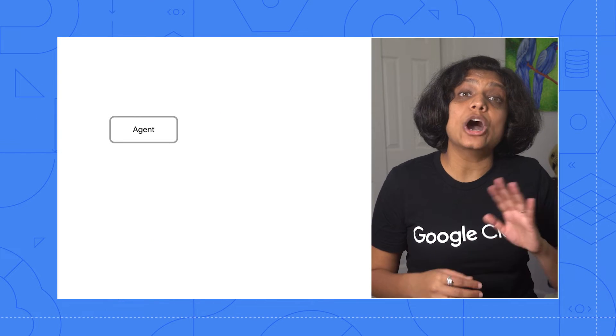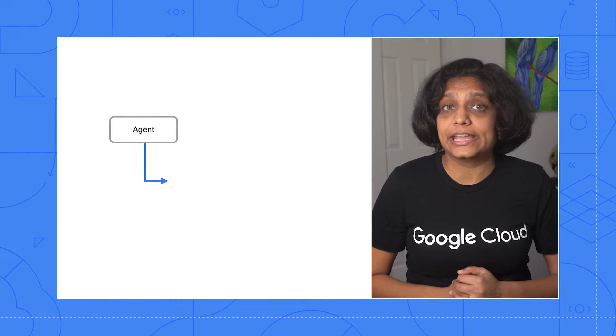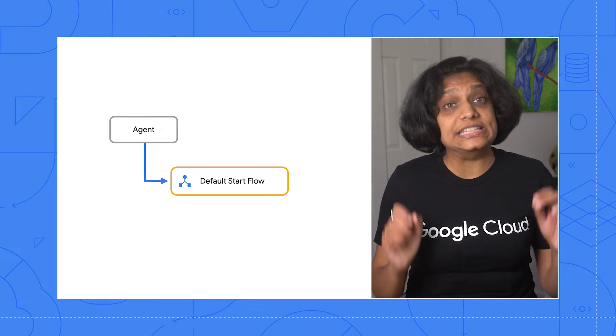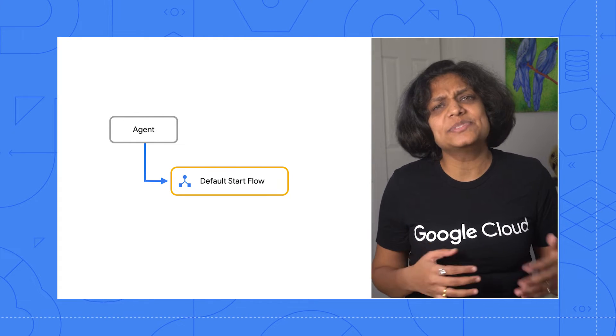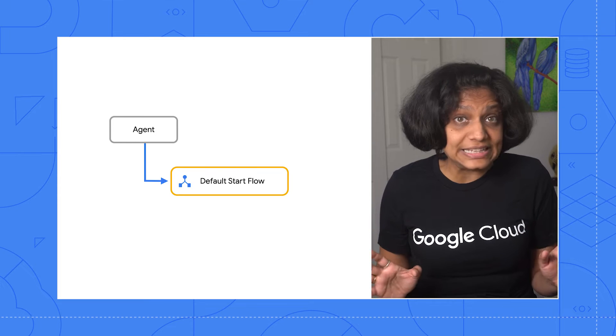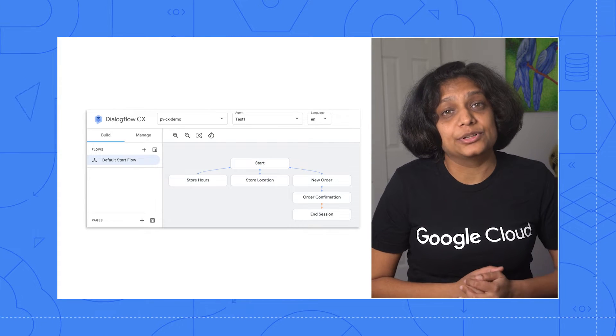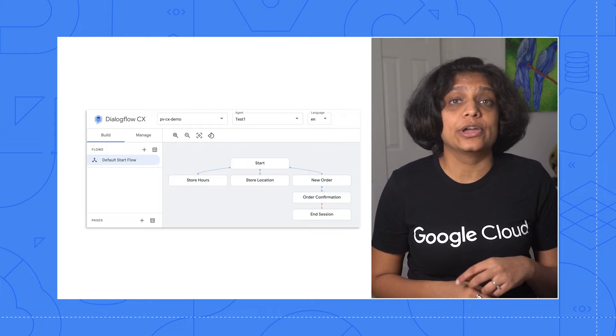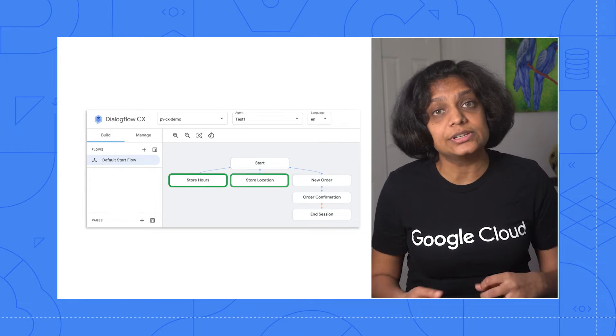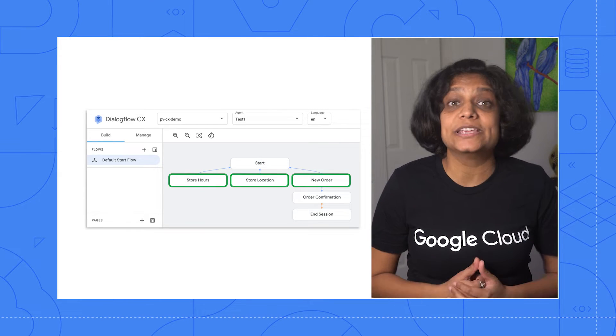Flows are used to contain and control the definition of these topics and their associated conversational paths. Every agent is automatically created with one flow called default start flow. Sometimes the single flow may be all you need for a simple agent. For example, the default start flow here provides store hours, store location, and helps place new orders.